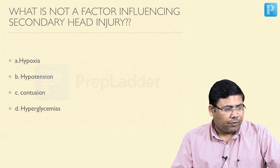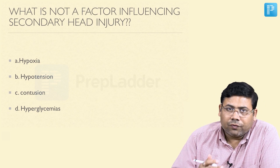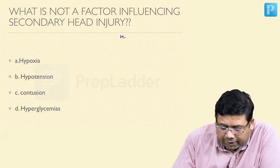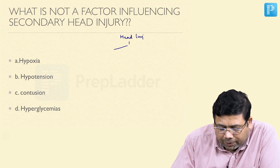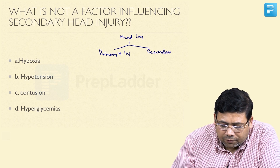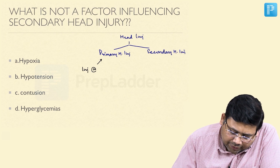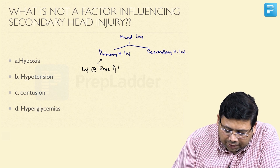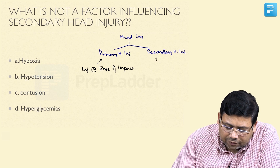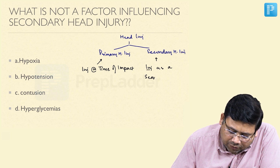Let us go to the second question: what is not a factor influencing secondary head injury? To answer that, you have to understand that head injury is of two types — primary head injury and secondary head injury. The injury at the time of impact is primary head injury. Secondary head injury is the injury as a consequence or sequel of primary head injury.